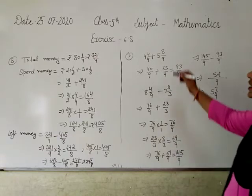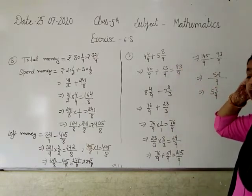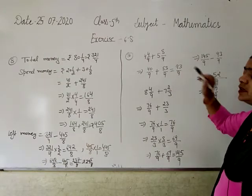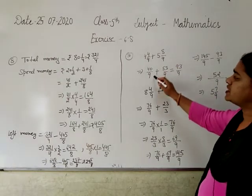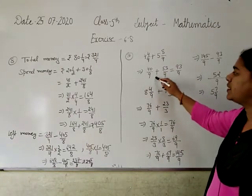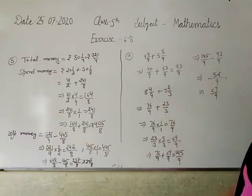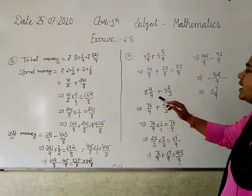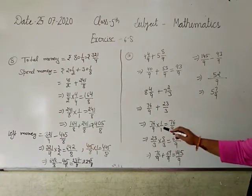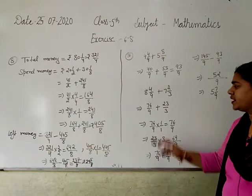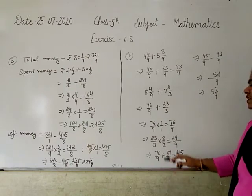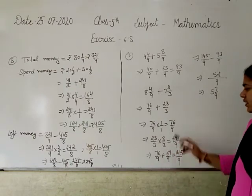In 10th question, you have 2 fractions given. From their total, subtract this one. First find this total. Convert mixed fraction to improper fraction. These are like terms, no need for LCM, so directly add them. Then convert this mixed to improper fraction, take LCM. LCM will be 9. After finding LCM 9, multiply 76 by 9 by 1, and 23 by 3 by 3.